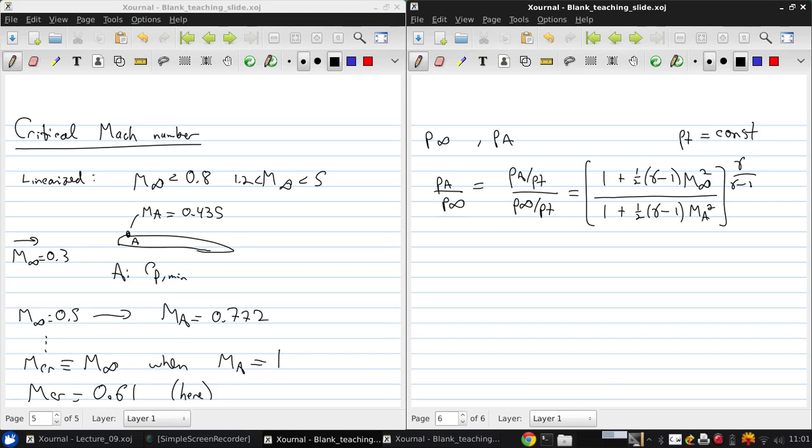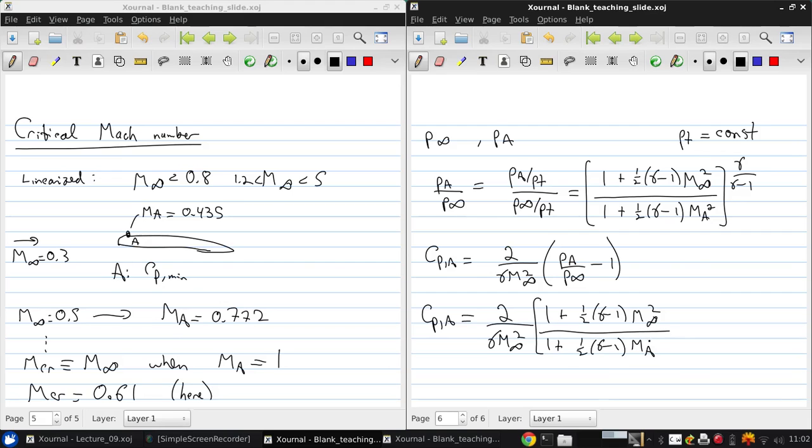All to the power of gamma over gamma minus 1. Our pressure coefficient at A is 2 over gamma M infinity squared, using the non-linearized version of the pressure coefficient that we saw last time. So that CP at A can be written as 2 over gamma M infinity squared times 1 plus 1 half gamma minus 1 MA squared to the gamma over gamma minus 1 power minus 1.